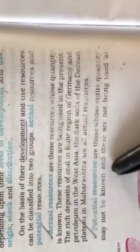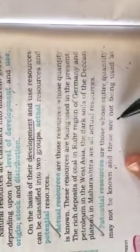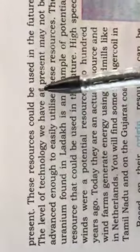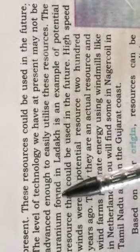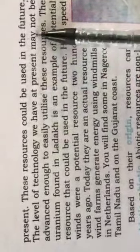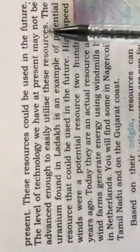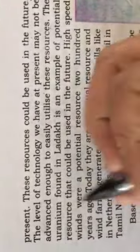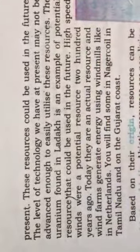Potential resources are those whose entire quantity may not be known. This is the key difference: in actual resources the quantity is known, while in potential resources the quantity is not known. Potential resources are not being used at present but could be used in the future. The level of technology we have at present may not be advanced enough to utilize these resources. The uranium found in Ladakh is an example of potential resources.